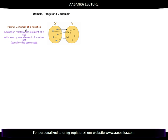We repeat the definition of a function once again. A function relates each element of a set with exactly one element of another set. Here x is the independent variable, and y is related to x — every element of x is related to only one unique element on y. This y is called the dependent variable.